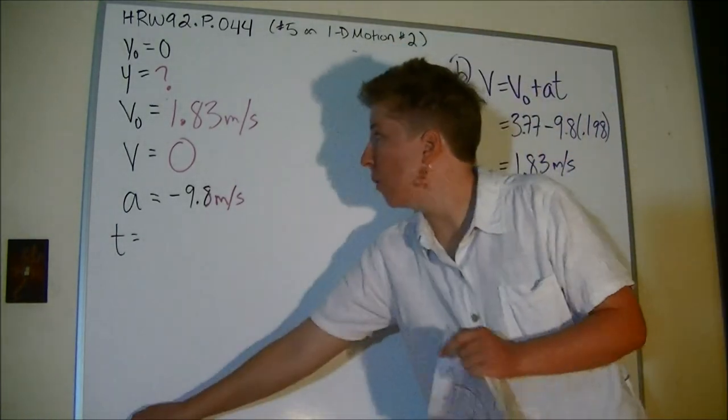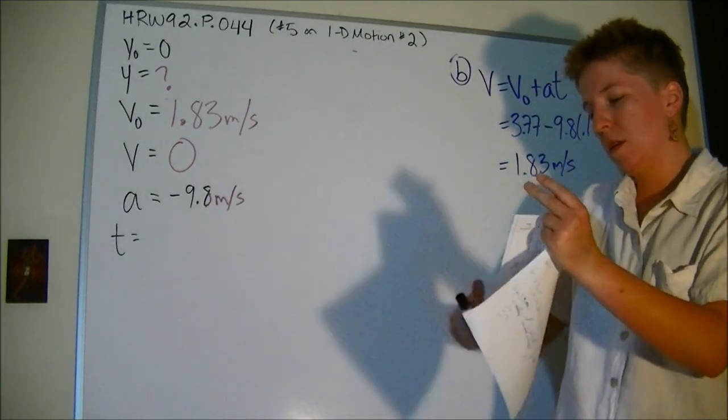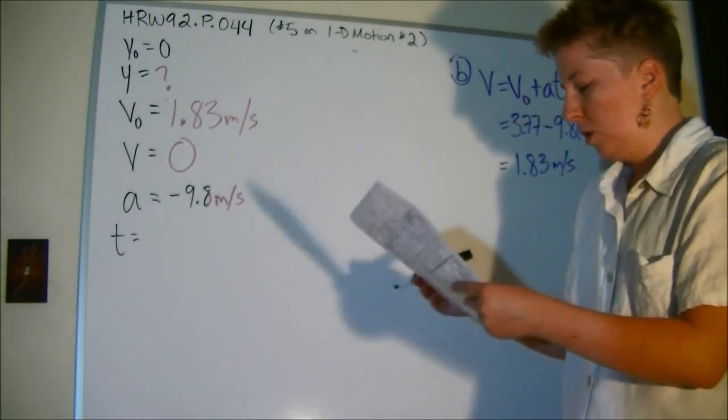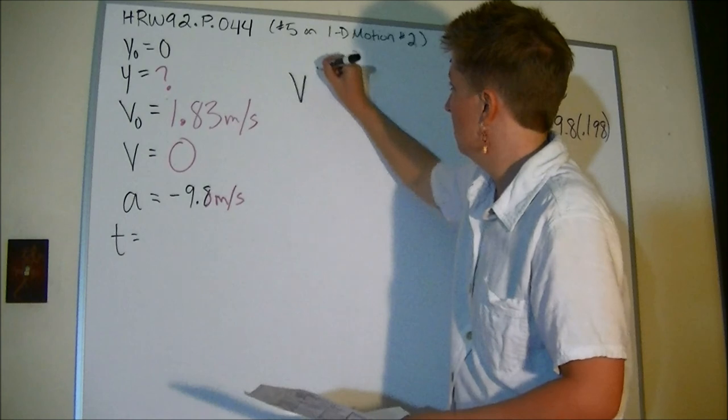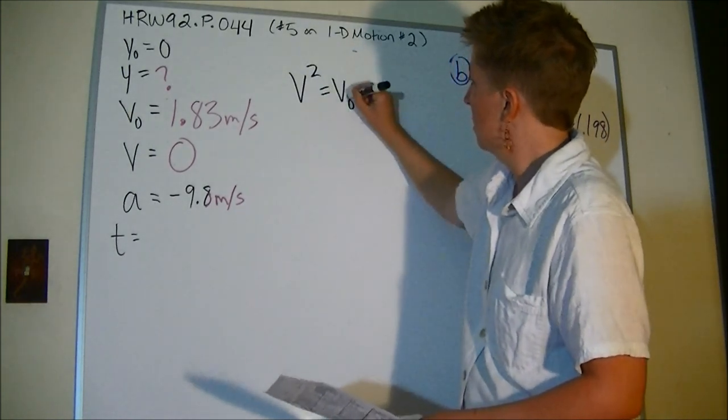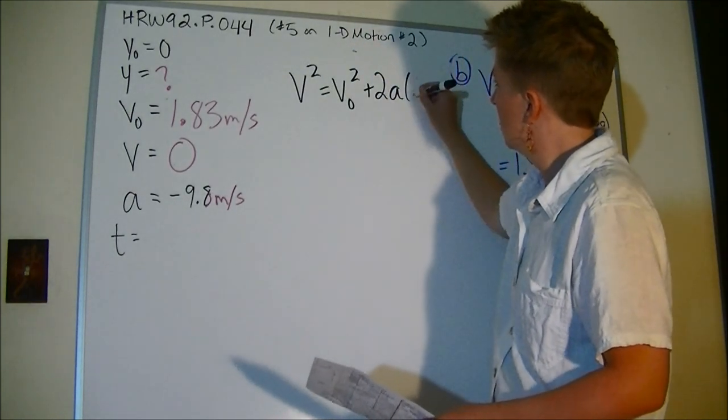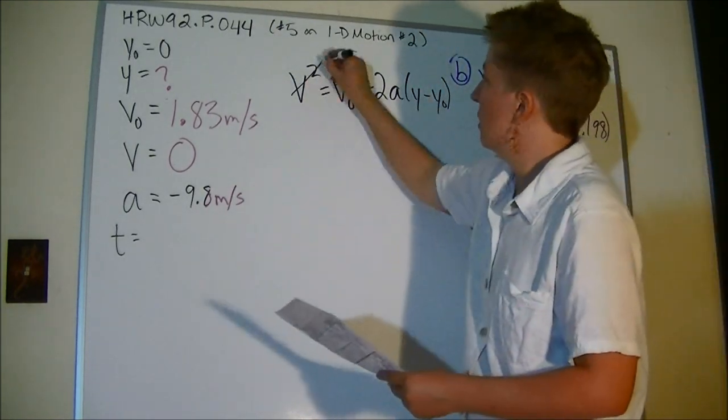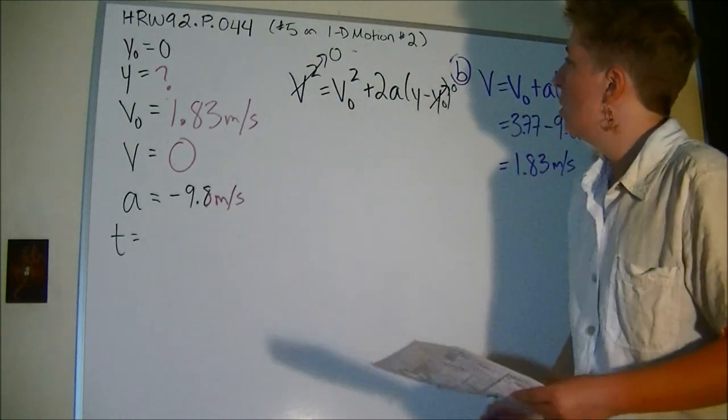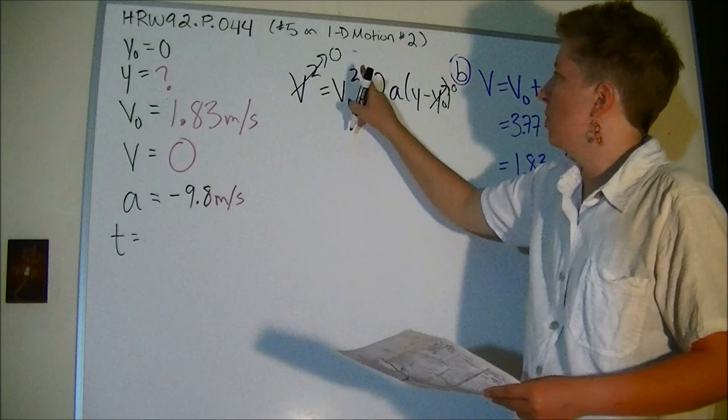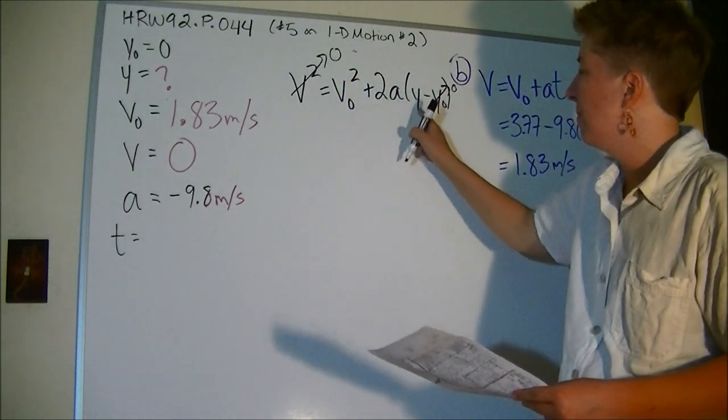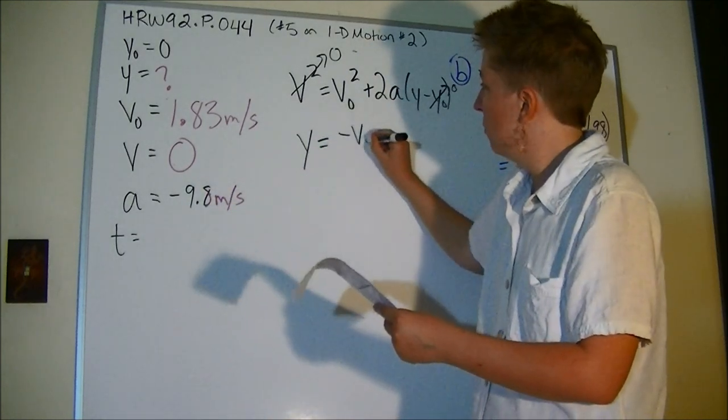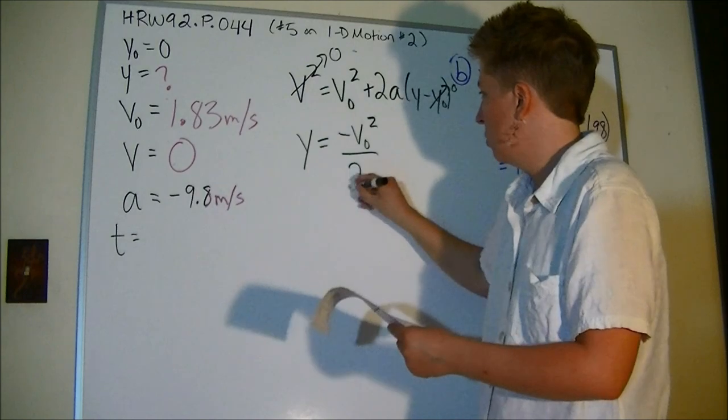All right, so I'm going to use my favorite equation, this one. And luckily this is already zero and that's already zero, so all I have is zero equals V naught squared plus 2ay. If I do all the math for that, solving for y, I get negative V naught squared over 2a.